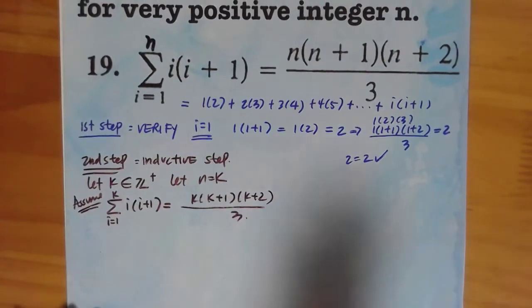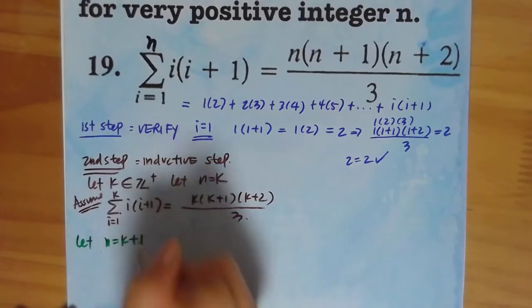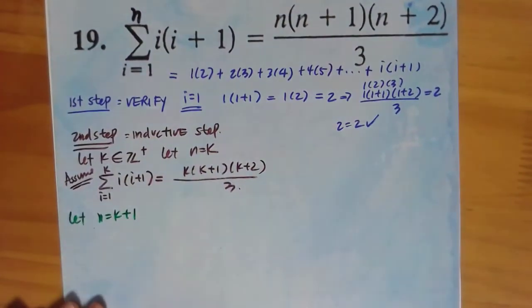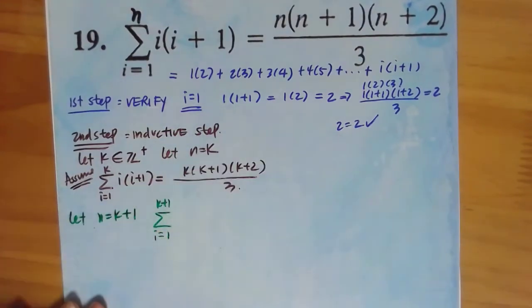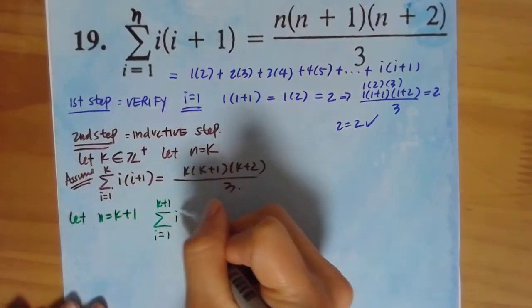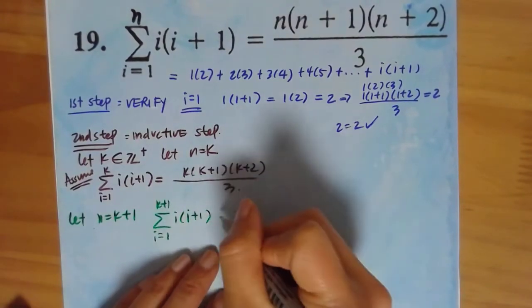All right, well let's go to the thing, the inductive step. That means let n equals k plus 1. Let's let n equals k plus 1 now. That means we have this: i equals 1 all the way to k plus 1, the next term. i, i plus 1, right? That means it's this.